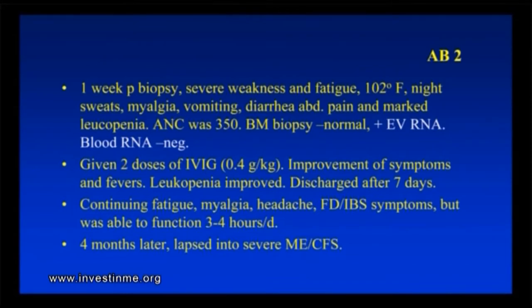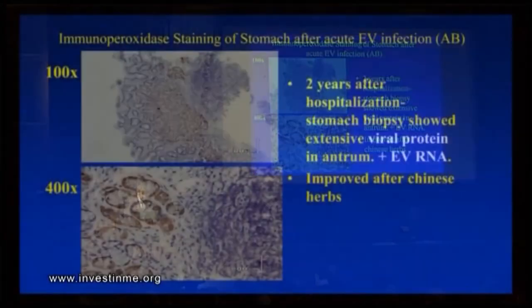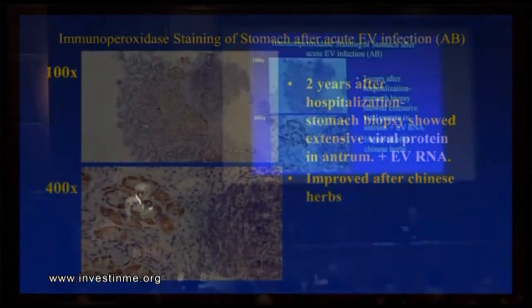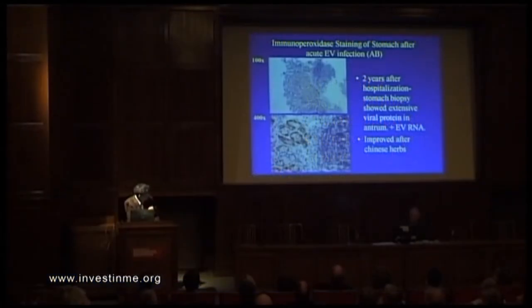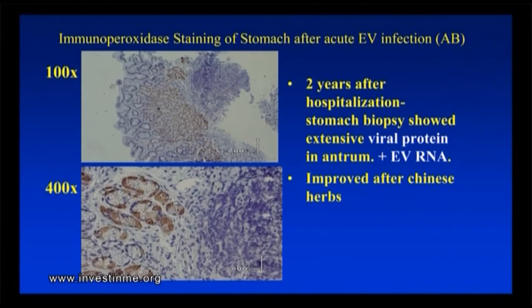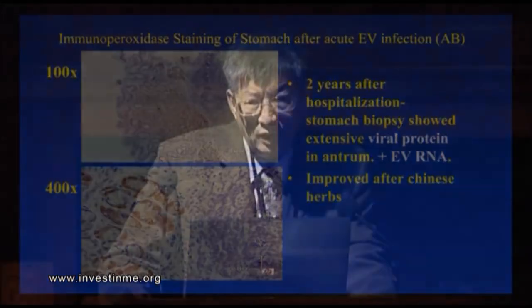Then she continued to have fatigue, body aches, headaches, functional dyspepsia, and IBS symptoms, but was able to function about three to four hours per day. After four months, the patient basically lapsed into a severe case of ME-CFS. She was bedridden for the next how many years? Two years later, when we learned about stomach biopsies and looking for the viral protein using immunostaining, we were able to show the viral proteins in the stomach cells. We also found enterovirus RNA in the stomach tissue, confirmed by sequence of the RNA, and she did improve after taking Chinese herbs. She's now working about six to eight hours a day, functioning at about 70% of normal, but not 100%.